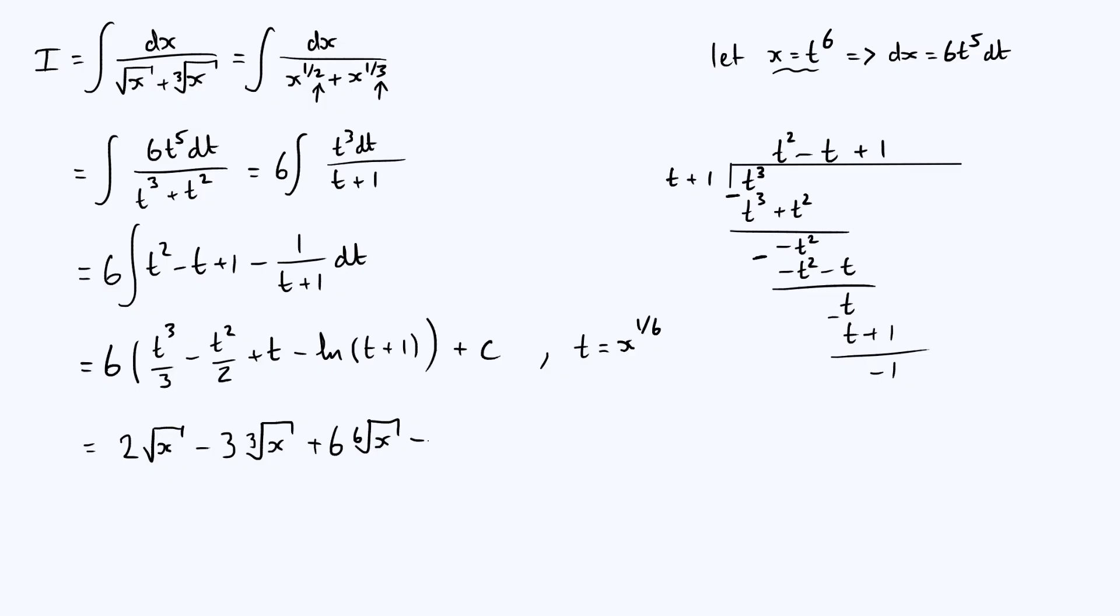And finally, we've just got this minus 6 natural log of the 6th root of x plus 1. And then we've got our constant of integration. So there you go. We have integrated this slightly weird-looking integral using a non-obvious substitution combined with polynomial long division. Now, if you found this interesting, do keep an eye out for one of my upcoming videos in which I'm going to work through a more kind of generalized example of an integral of a similar form to this one.